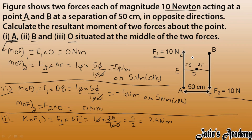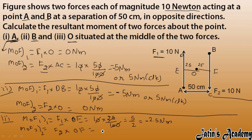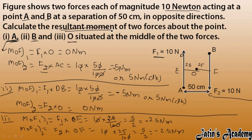F1 about O is clockwise, so minus 2.5 Newton meters. For F2 about O: force is 10 Newton, perpendicular distance — call it OF — is also 25 centimeters. So: 10 × (25/100) = 2.5 Newton meters, also clockwise, giving minus 2.5 Newton meters.